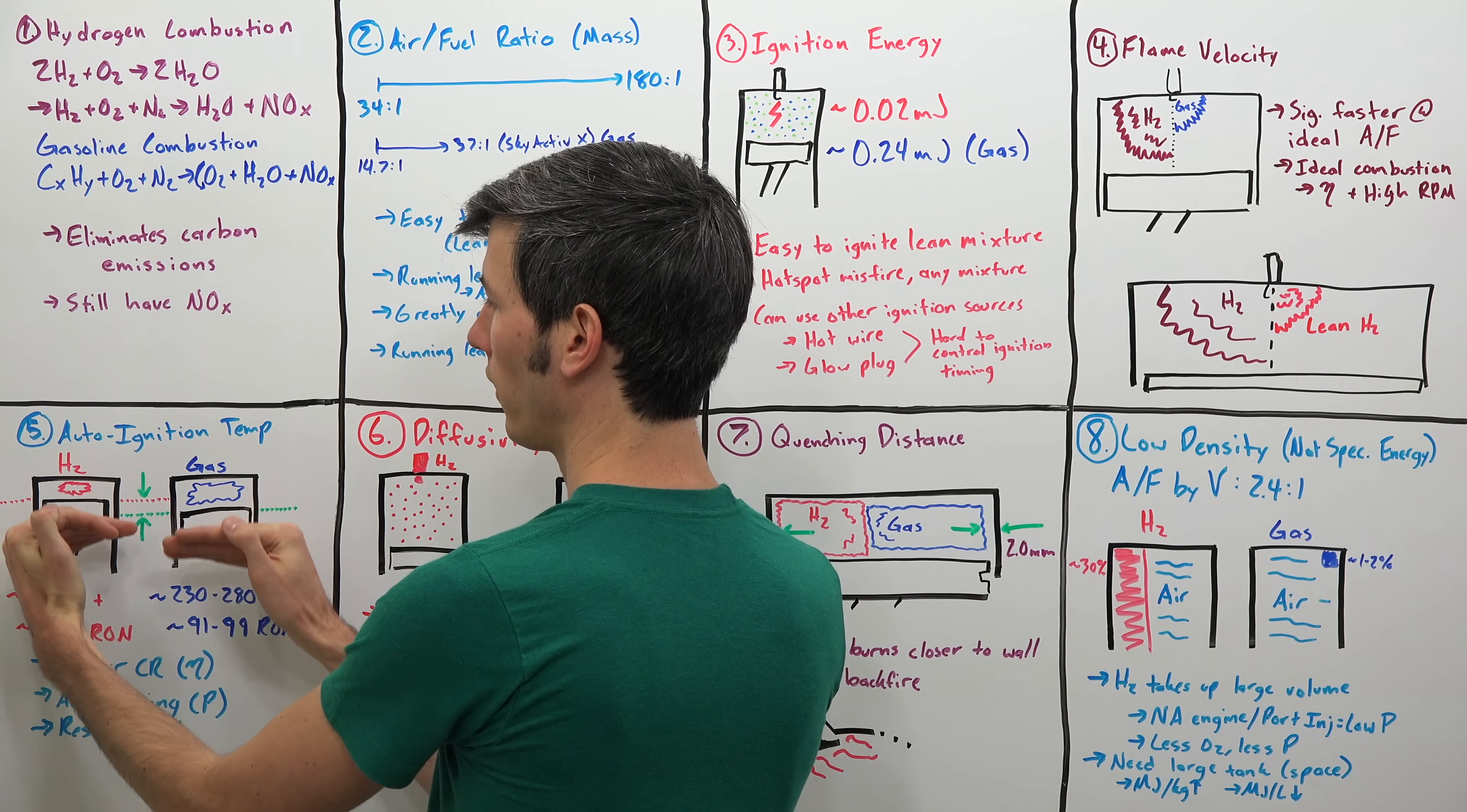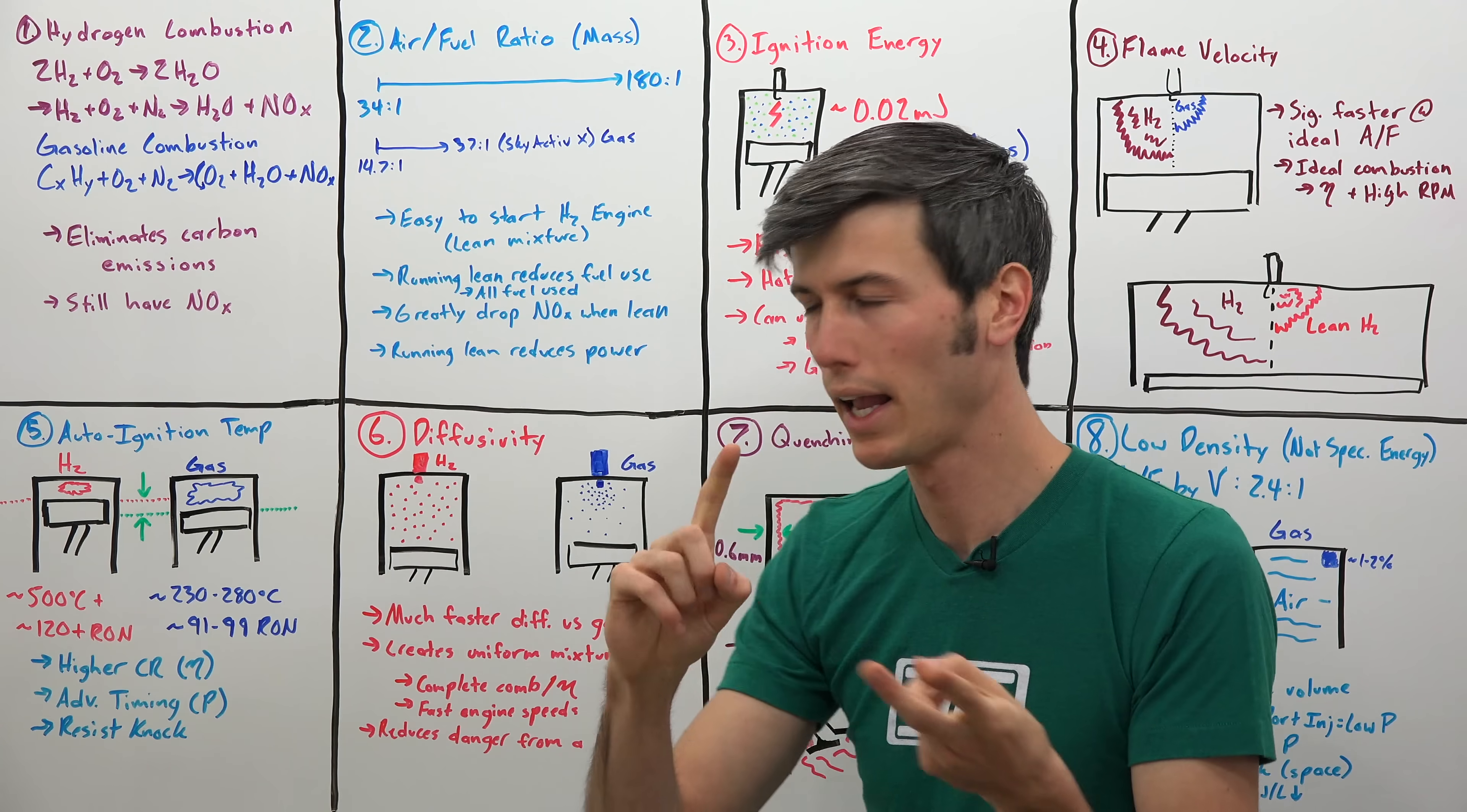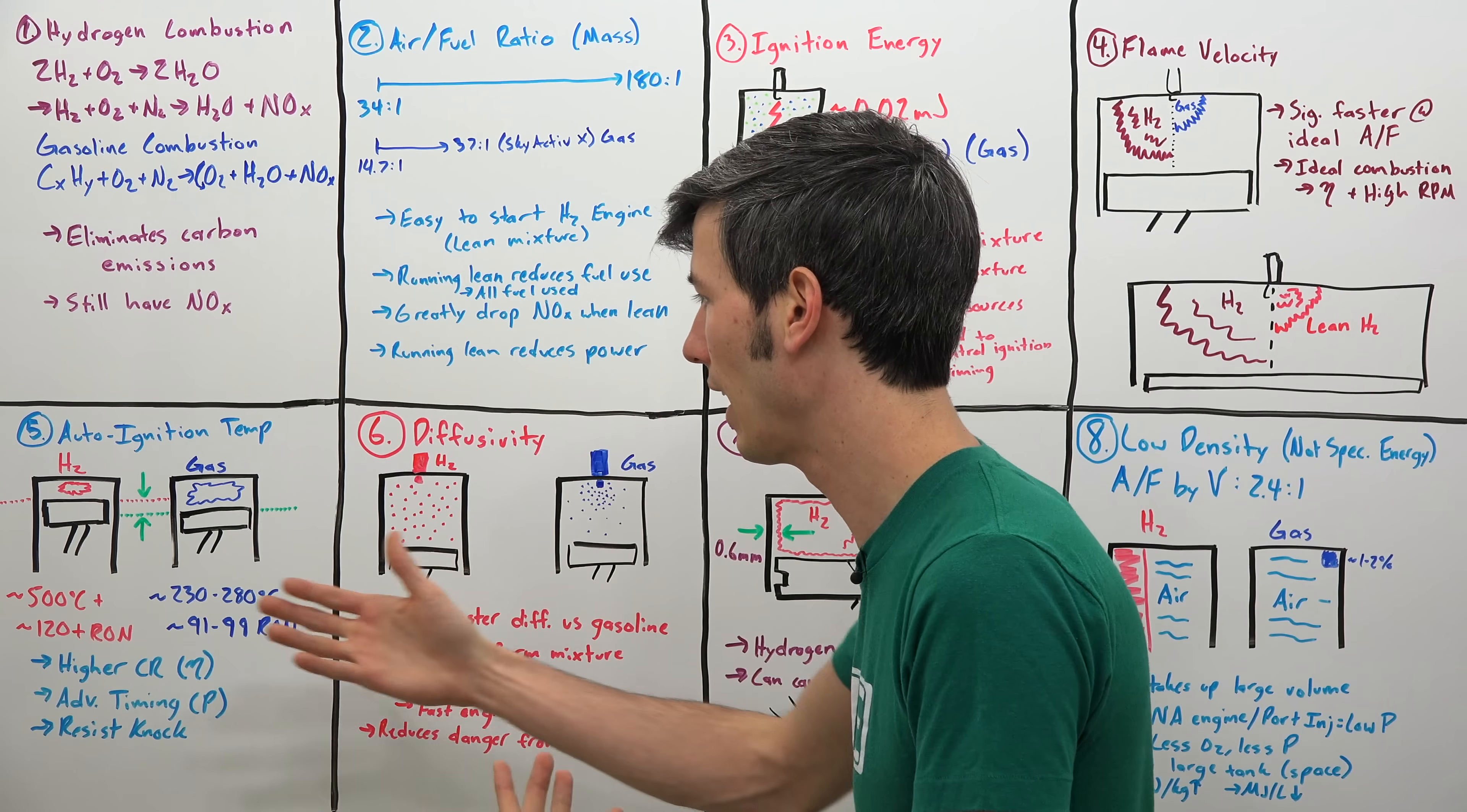And so what this means is if you were to look at how much could you compress this air fuel mixture before it ignited, you could compress that hydrogen and air mixture more than a gasoline engine. And that means you can use a higher compression ratio. So by using a higher compression ratio, you make more power and you are more efficient. It also means you can advance timing more. You have more flexibility with timing with hydrogen fuels. And it means it will be more resistant to knock because of that high octane number.